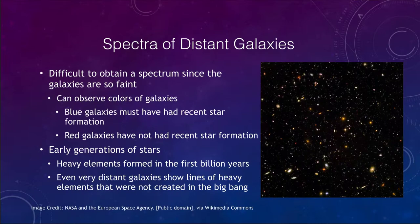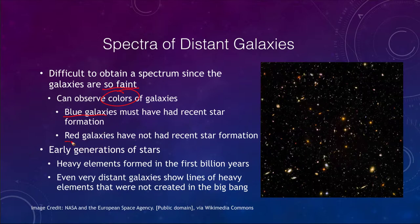So what do we see? We can look at the spectra of galaxies, though one problem is that it is difficult to get the spectrum of a galaxy because galaxies are so faint. However, we can observe the colors of galaxies. A blue galaxy must have had recent star formation, and a red galaxy will not have had recent star formation. Looking at an image, we can see very red galaxies with very little recent star formation and bluer galaxies that have had much more star formation in the recent past.